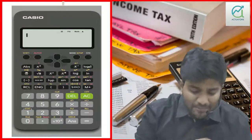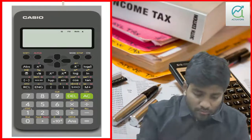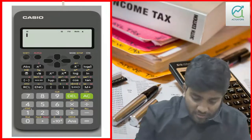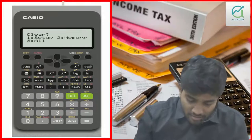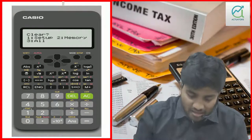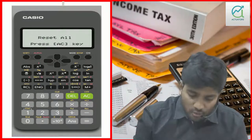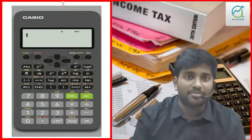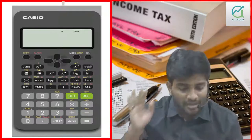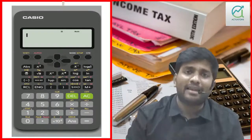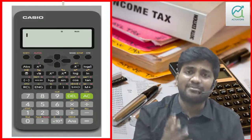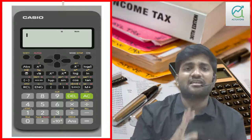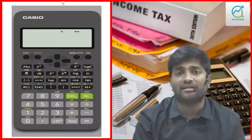First of all, I will clear the calculator: Shift, 9, 3, equal to, AC. Then again Shift, 9, 3, equal to, AC. Everything is now clear.